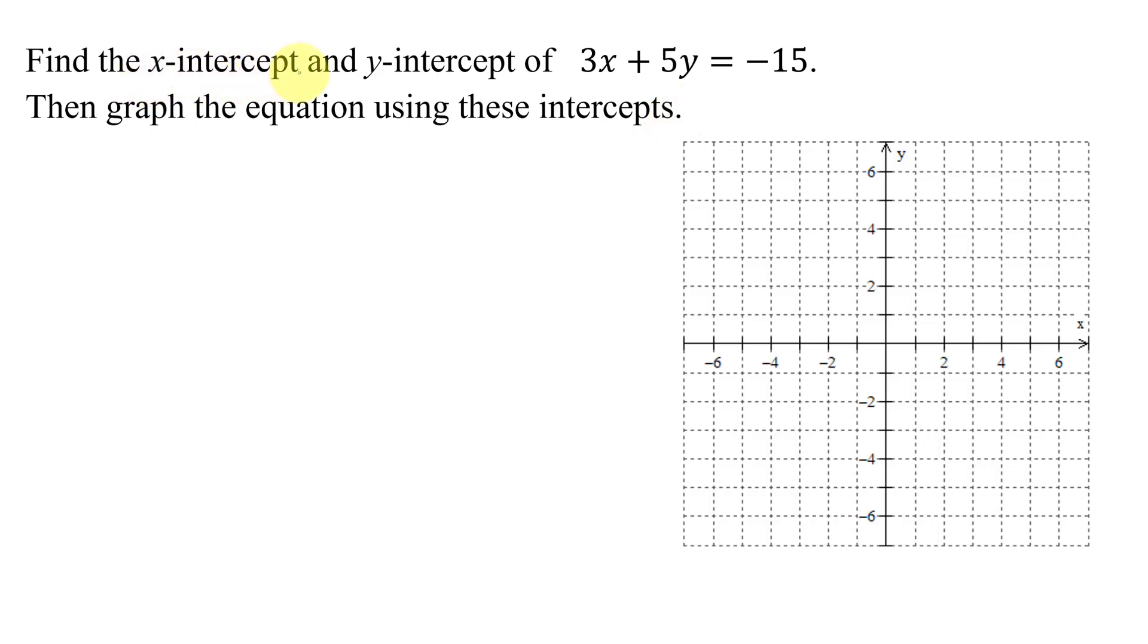So the first thing I need to do is find the x-intercept. How do we find the x-intercept? We do it by setting y equal to 0. So I'm going to substitute y equals 0 into the equation of my line. So I'm going to get 3x plus 5 times y, which is 0, equals negative 15.